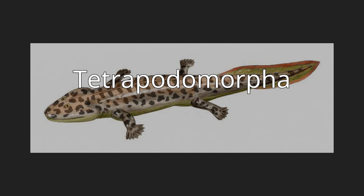Advanced forms transitional between fish and the early labyrinthodonts, such as Tiktaalik, have been referred to as 'fishopods' by their discoverers, being half fish, half tetrapod in appearance and limb morphology.